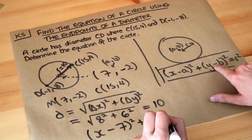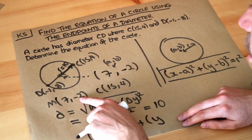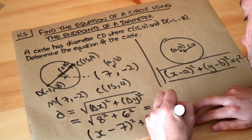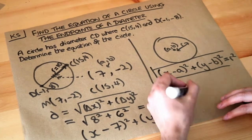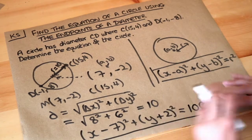...plus (y-b)², so y - (-2), minus -2. So y - (-2) is (y+2)², is equal to the radius squared. Well the radius is 10, so it's going to be 10², which is 100. And that is the final answer.